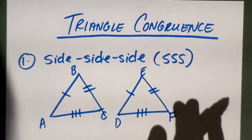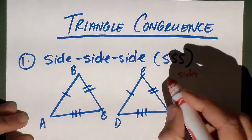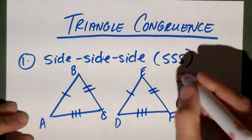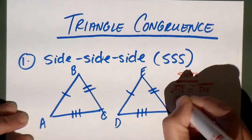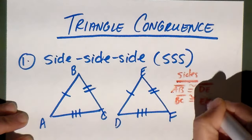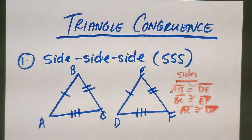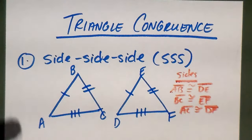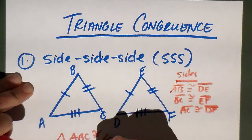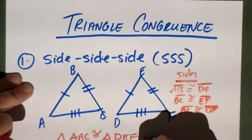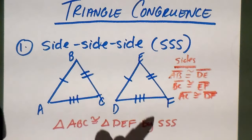Showing all three sides are congruent is enough. If I label the congruent sides, I would say AB is congruent to DE, BC is congruent to EF, and AC is congruent to DF. So those two triangles are congruent by side-side-side. I would then make my congruence statement: triangle ABC is congruent to triangle DEF by SSS.